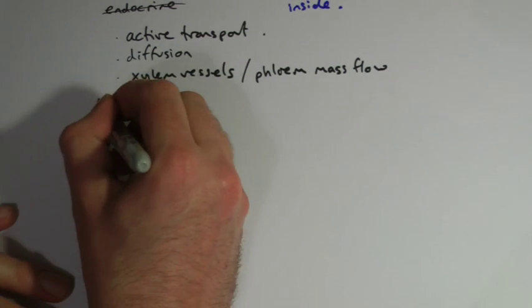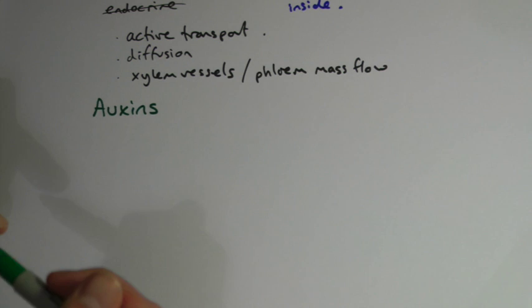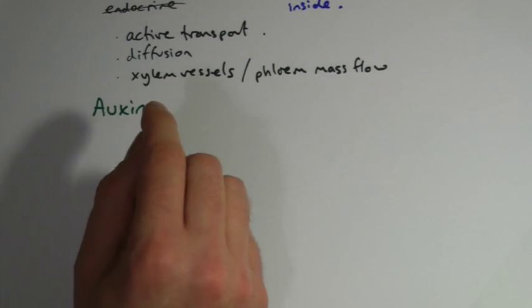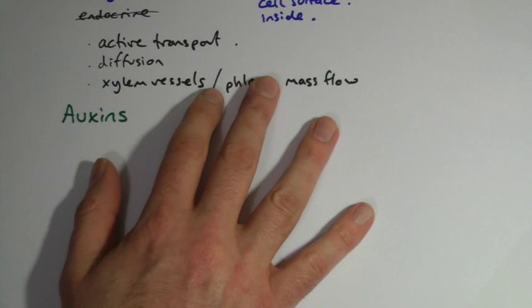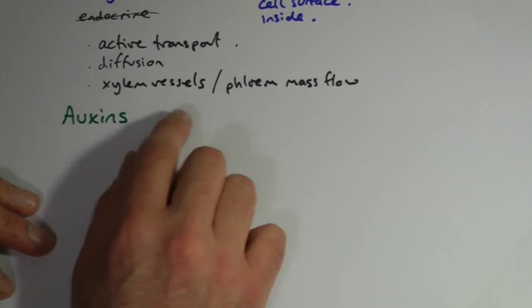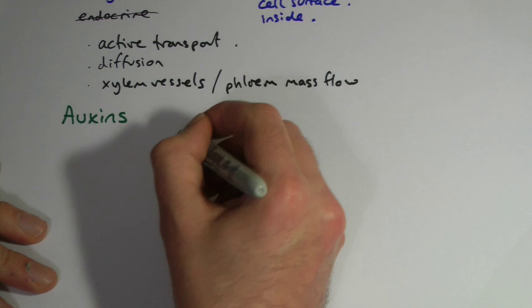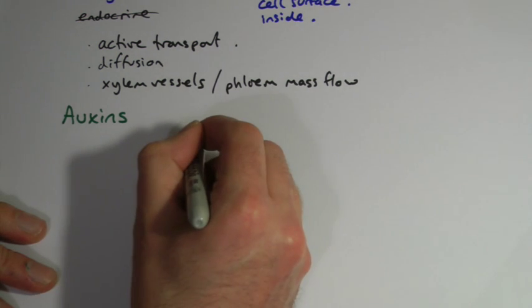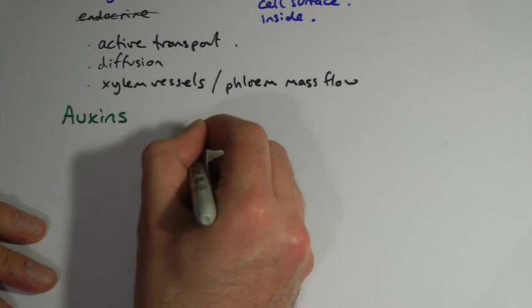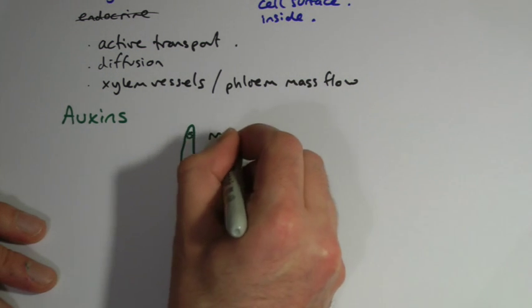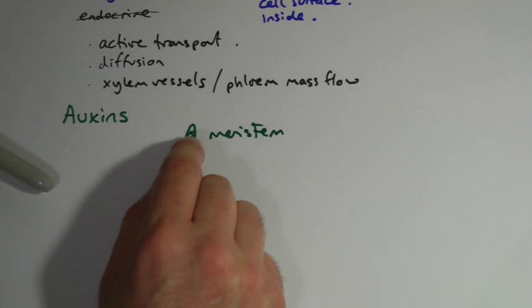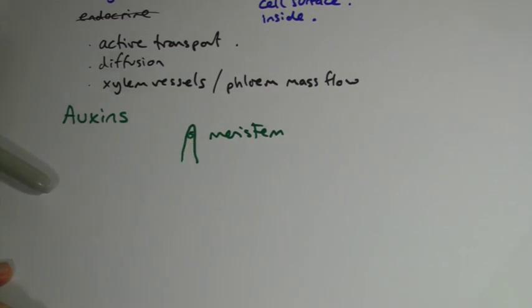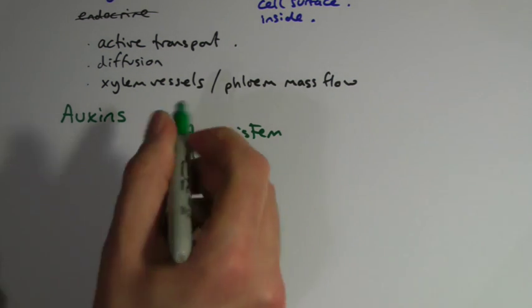There are really only five plant growth substances that come up and are of particular interest. You might remember auxins from GCSE — these are the plant growth substances involved in phototropism, which is when a plant grows towards light. The area of growth is just behind the tip of the root or shoot — this is meristem tissue, the cells that can undergo mitosis and cell elongation.